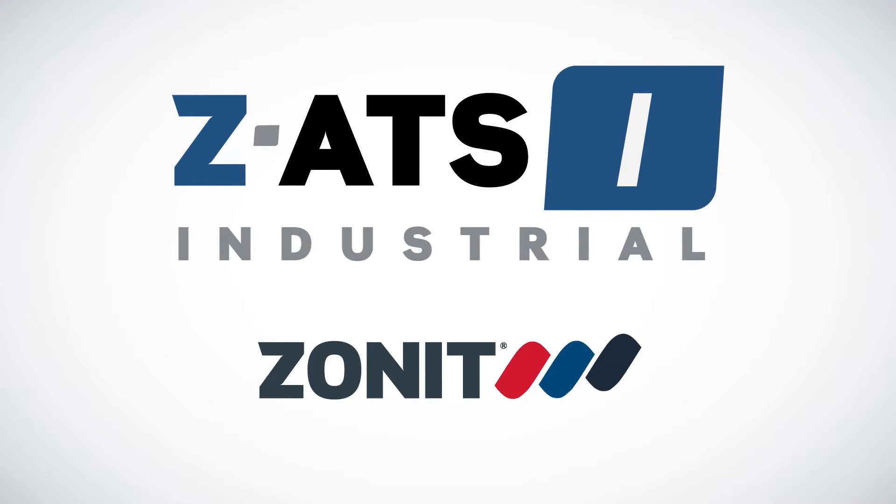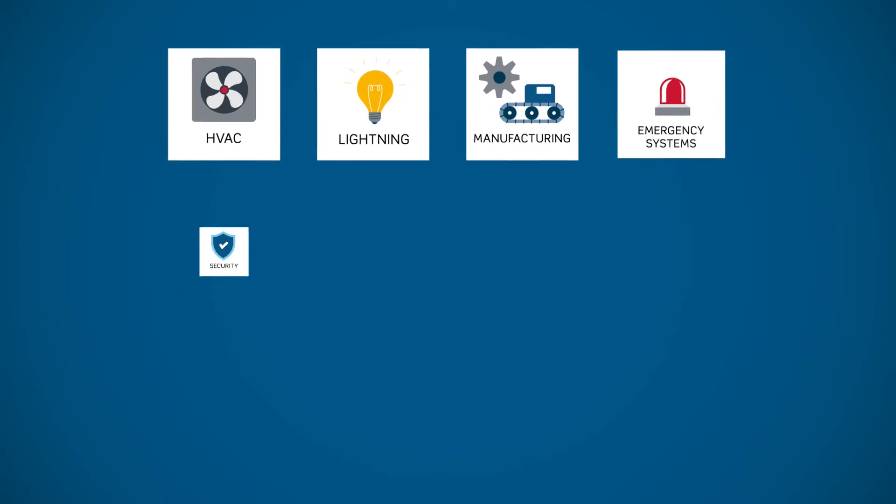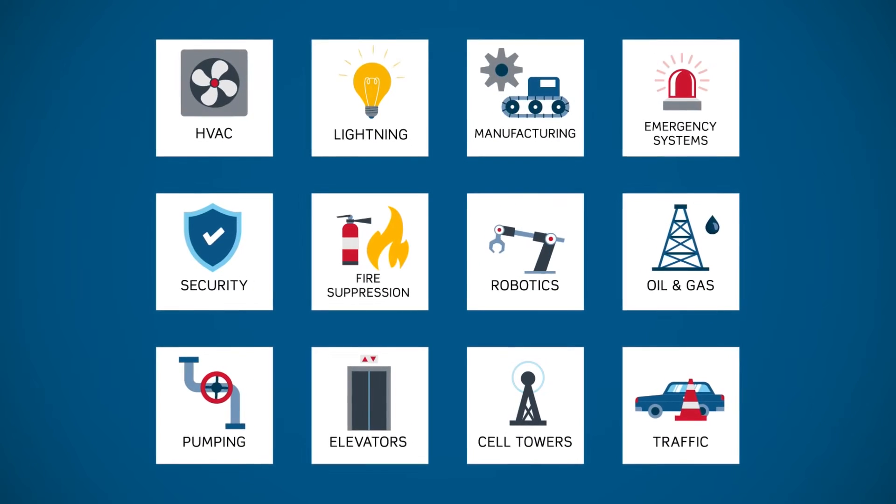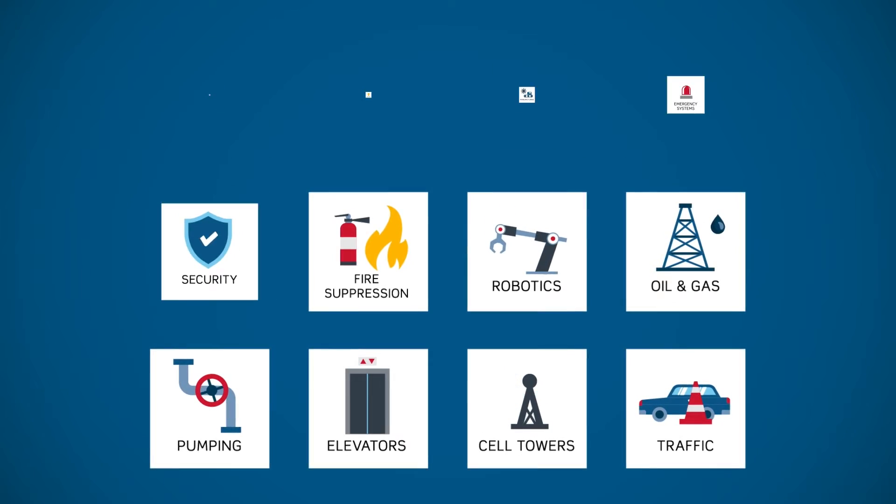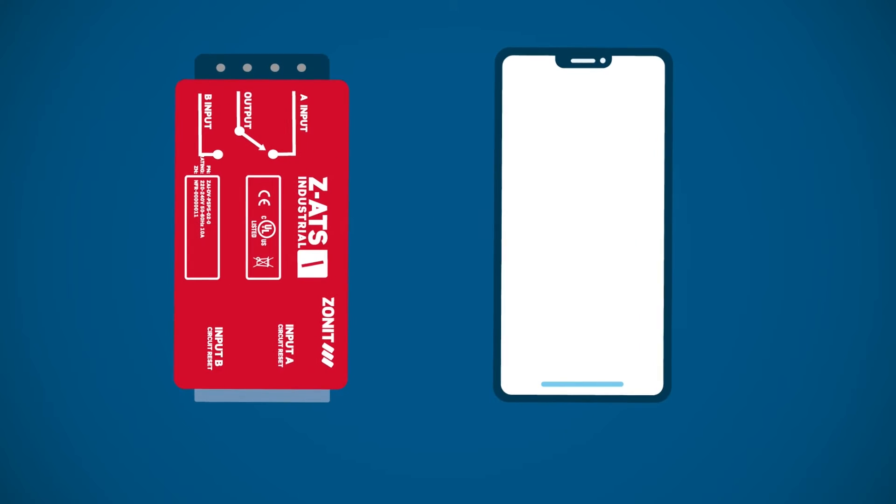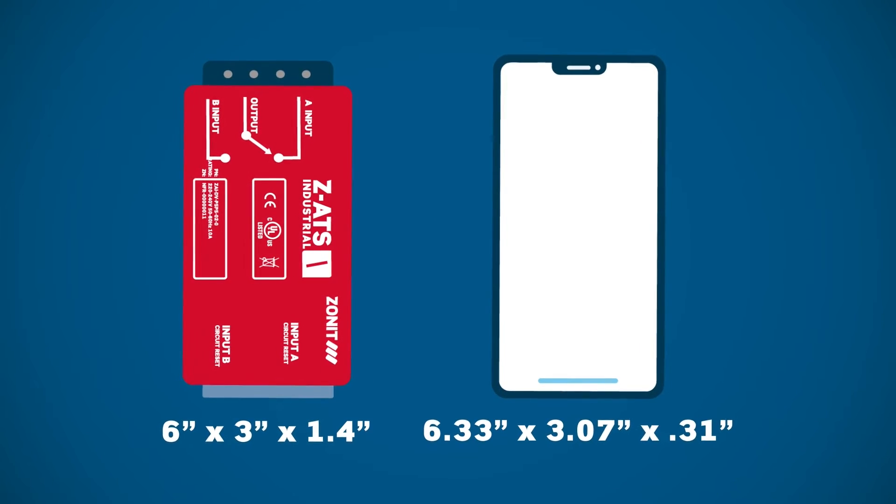Enter ZATS Industrial by ZONIT. Trusted by the largest and most demanding enterprises in the world across a wide range of industries and applications, ZATS Industrial is the smallest and most rugged automatic transfer switch ever created.